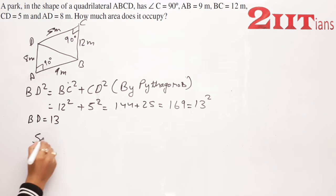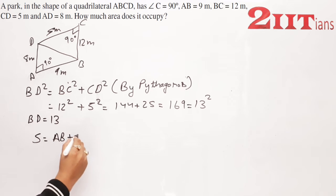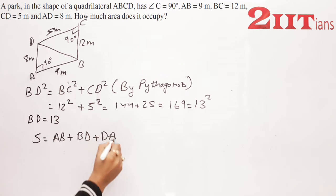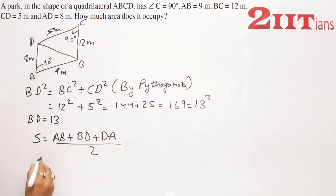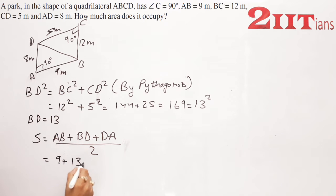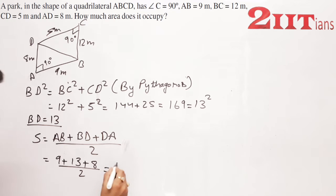S हम लोग निकालेंगे। S = (AB + BD + DA) / 2 = (9 + 13 + 8) / 2 = 30 / 2 = 15। तो हमारा S आजाएगा 15।